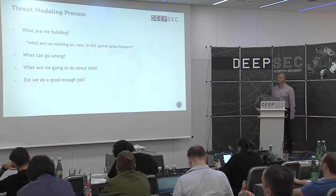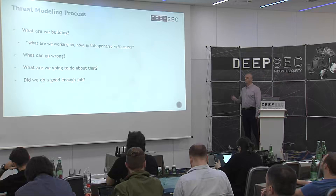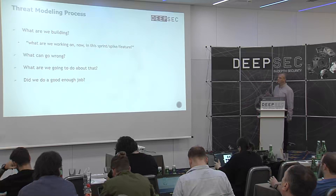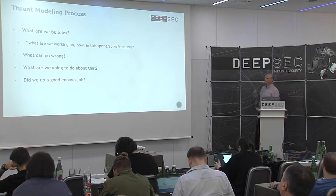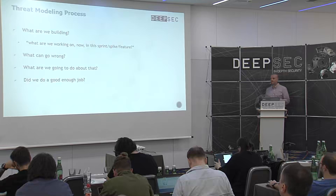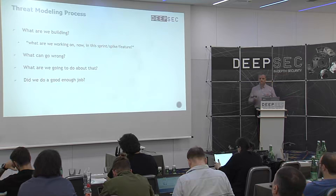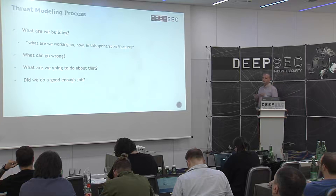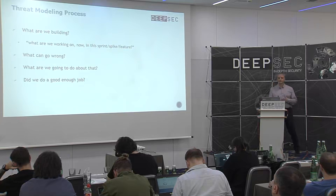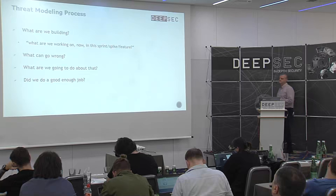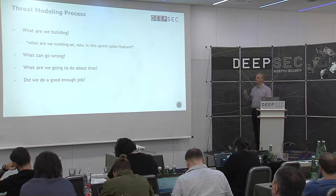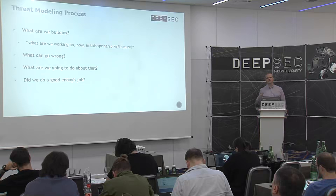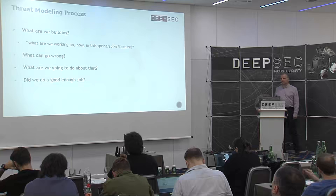When we do threat modeling, we should answer these core questions. Question one: what are we building? In Agile, what are we working on in this sprint? It's a decomposition of our design — we want to display all the components, what kind of data we have, and how data transfers from one place to another. The next question is: what can go wrong? We need to identify potential threats and abuse cases. Then: what are we going to do about that — countermeasures, how to protect our system? And finally: did we do a good enough job? We want to see reduction in the number of incidents in production and reduction in security defects.